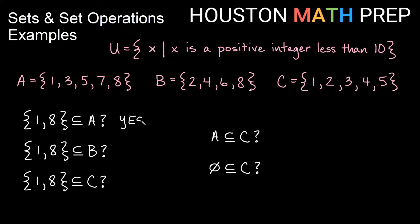Is {1, 8} a subset of B? Well, I look and I have 2, 4, 6, 8 in B. 8 is in B, but 1 is not in B anywhere. So since we're missing one of the elements in B, we say no, it is not a subset of B.